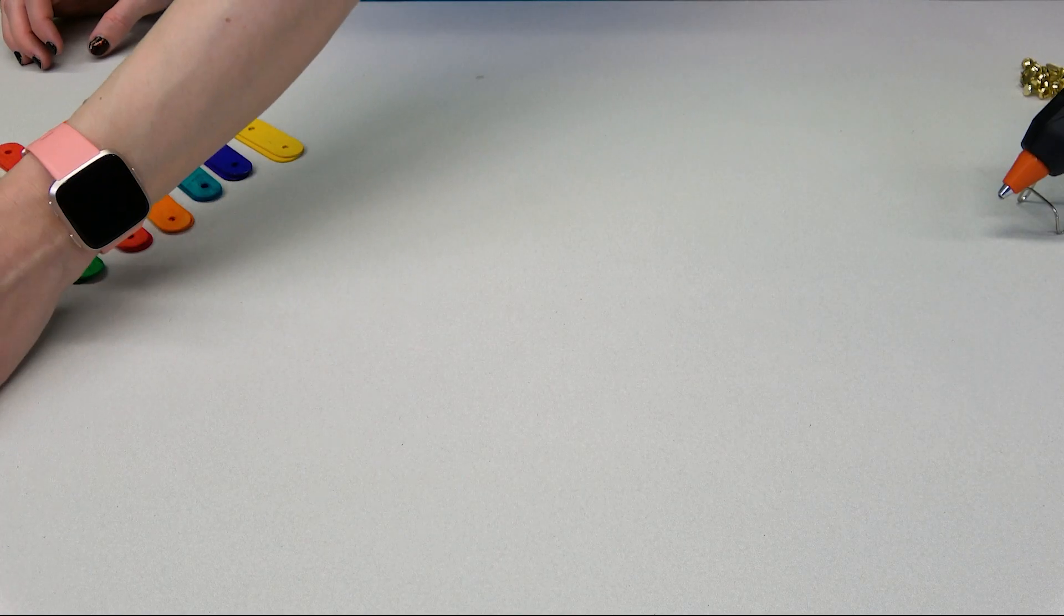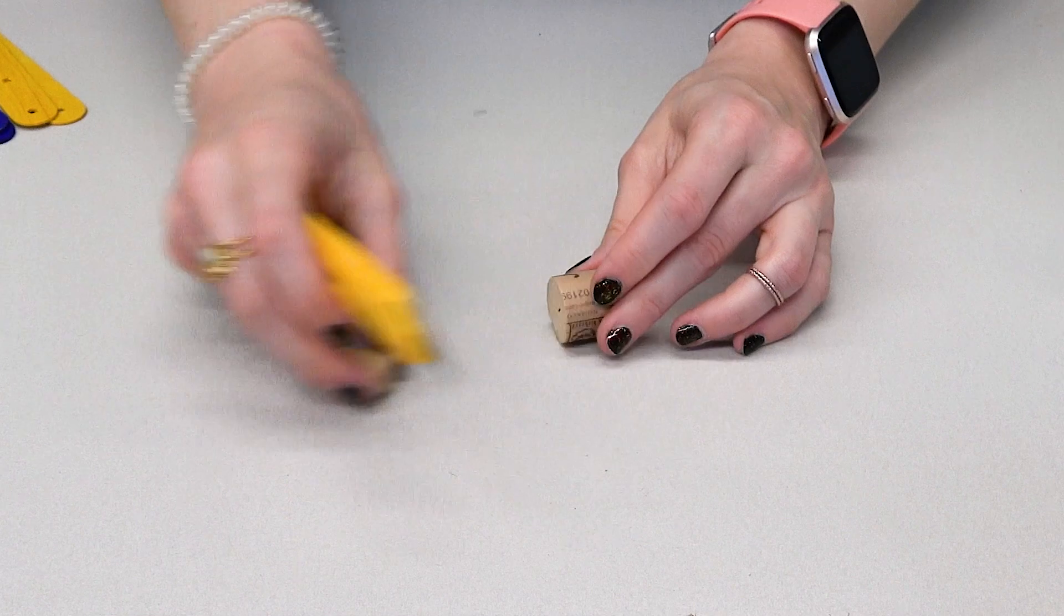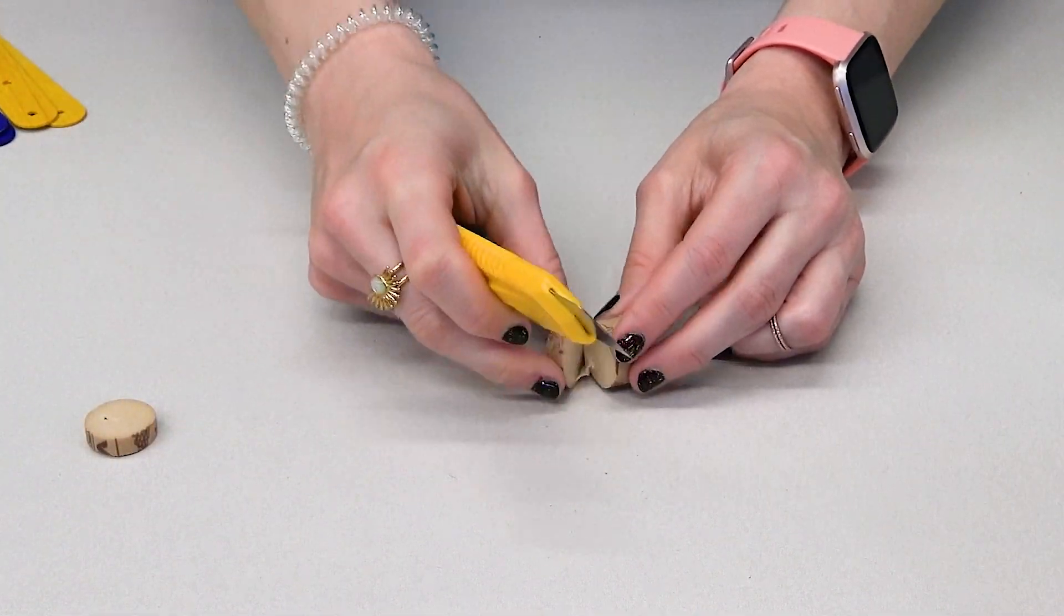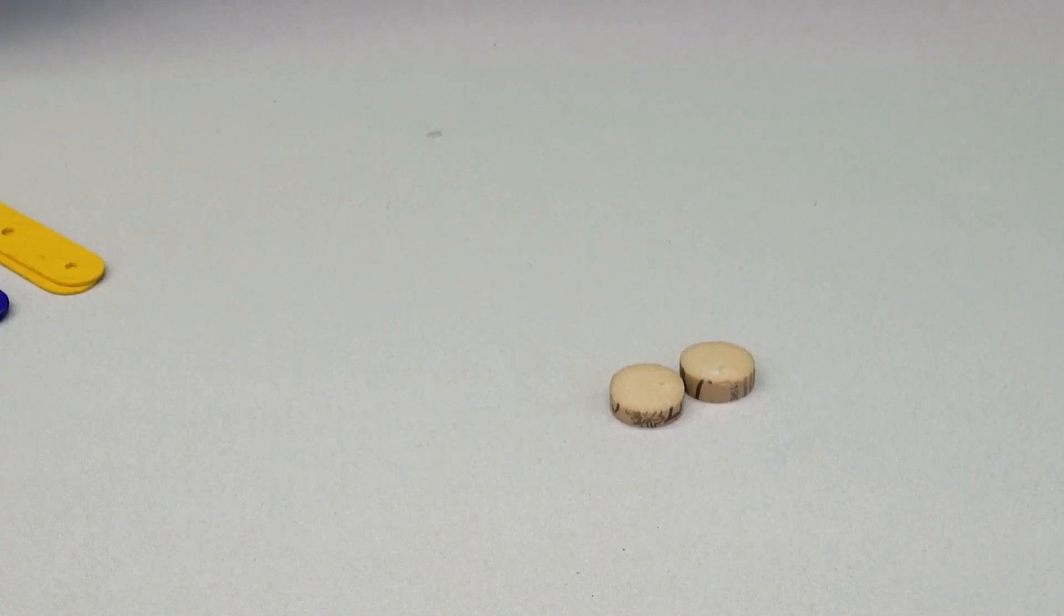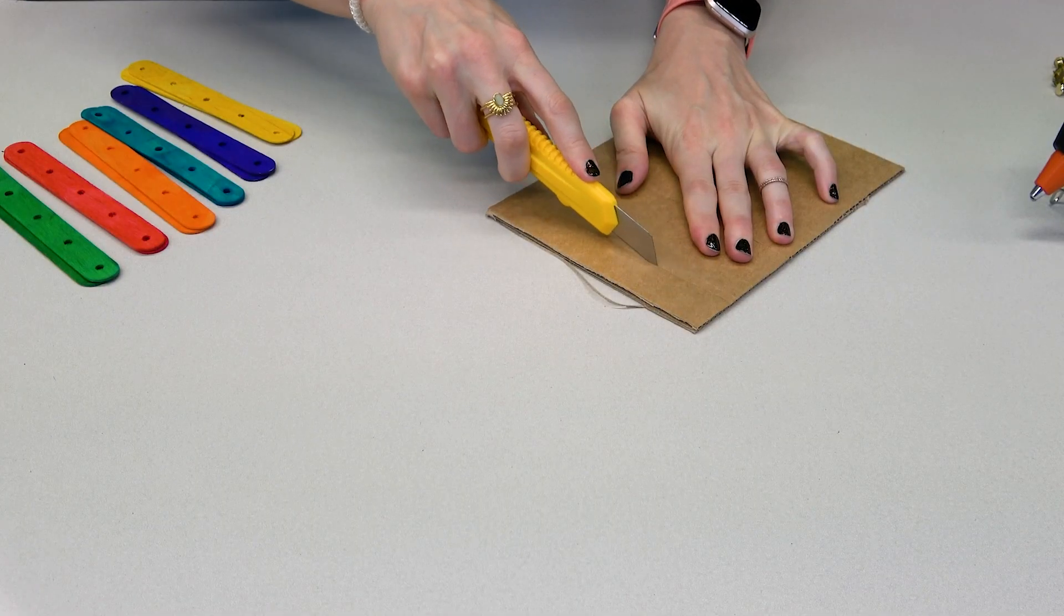Let's get started. First, cut two slices off the cork. Then use the cutter to cut two rectangles from the cardboard that are big enough to hold the cork later on.